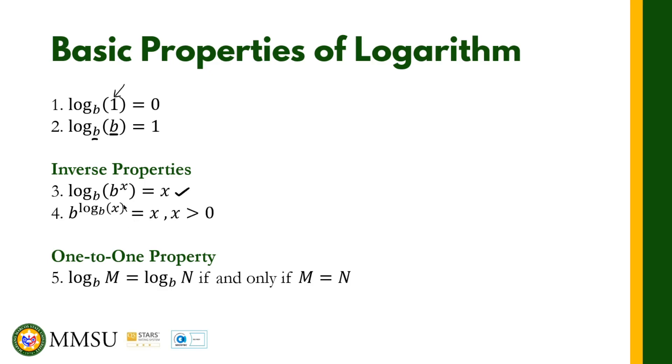For number four, we have b^(log_b(x)) = x, where x > 0. The base of the exponential form is the base of the logarithm, which is in the exponent. That means these two bases cancel each other out, and the answer is x. Remember these two inverse properties.